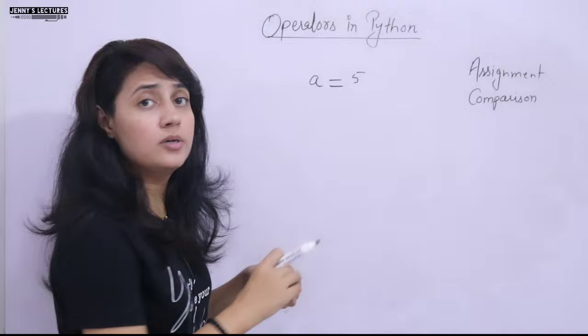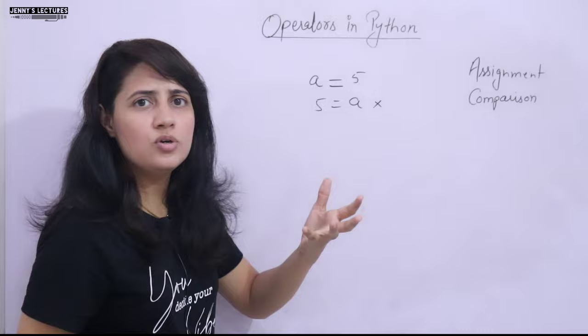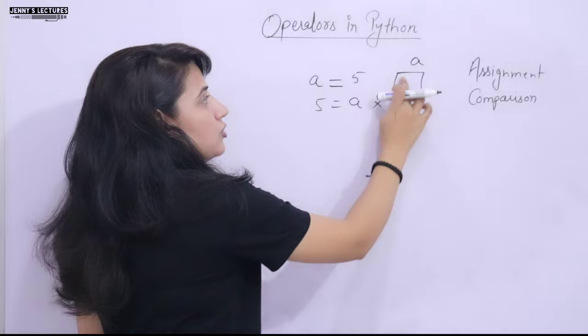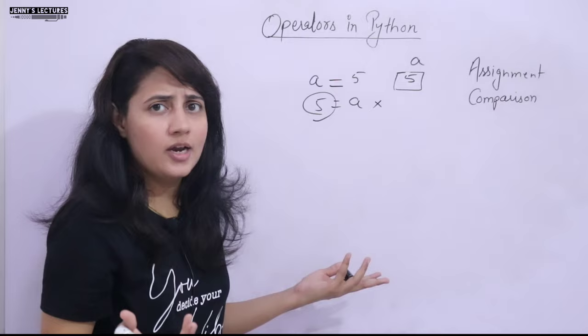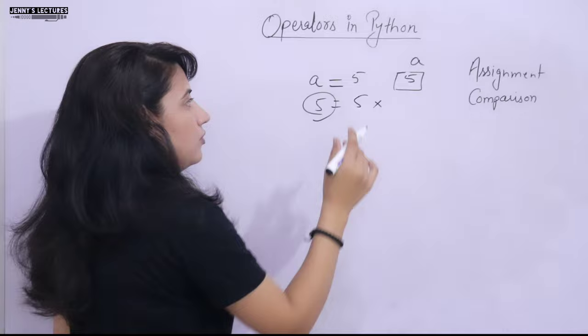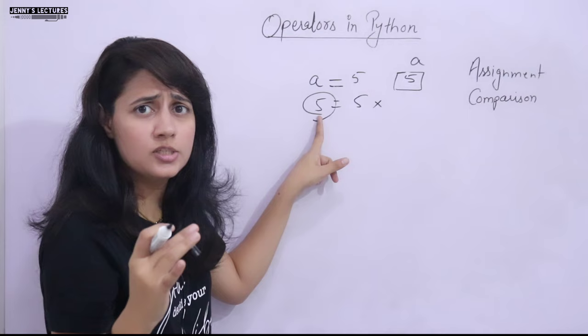You cannot write '5 = a' — that would be wrong, that would be illegal. On the left-hand side there must be a container or a variable, which is a named memory location where we can store something. So 5 can be stored in 'a', but 5 is a constant and we cannot store anything in a constant. On the left-hand side of the assignment operator there must be a variable or named memory location.